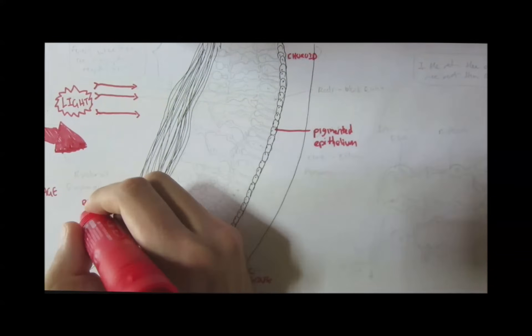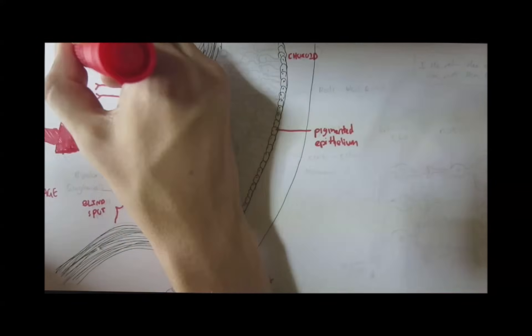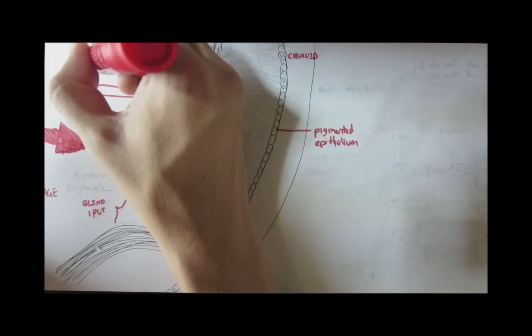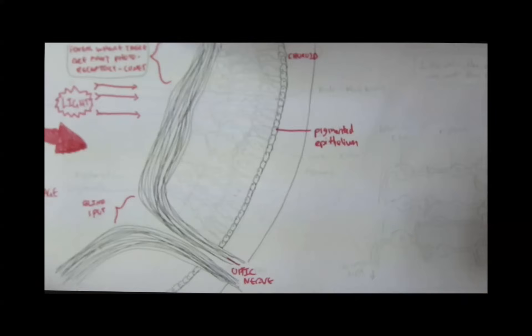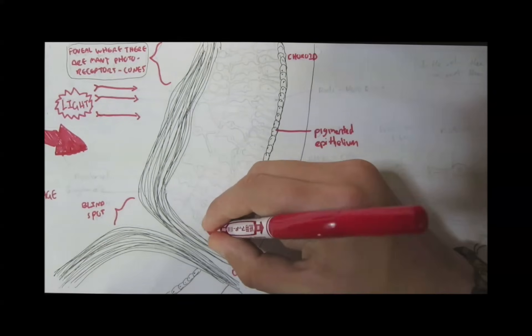We got the blind spot we mentioned earlier, where these nerves come in from the optic nerve. And then we got the fovea, where there are many receptor cones. Cones are the sensitive color ones.